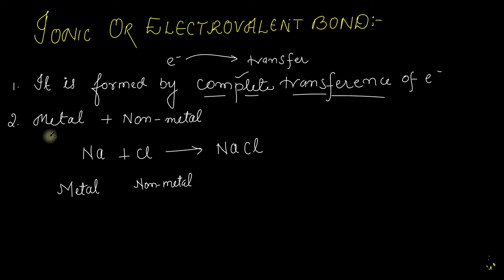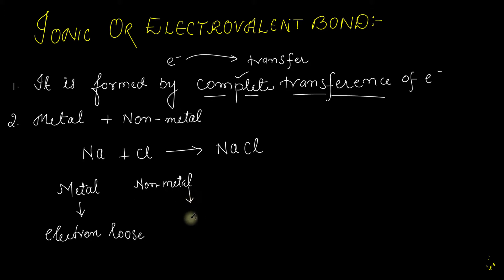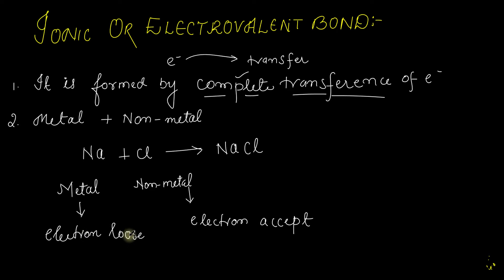When the formation of the bond is formed, metal and non-metal are participating. Metal will lose electrons. This is an important term to understand: metal will lose electrons. We can understand this from a flow chart perspective.